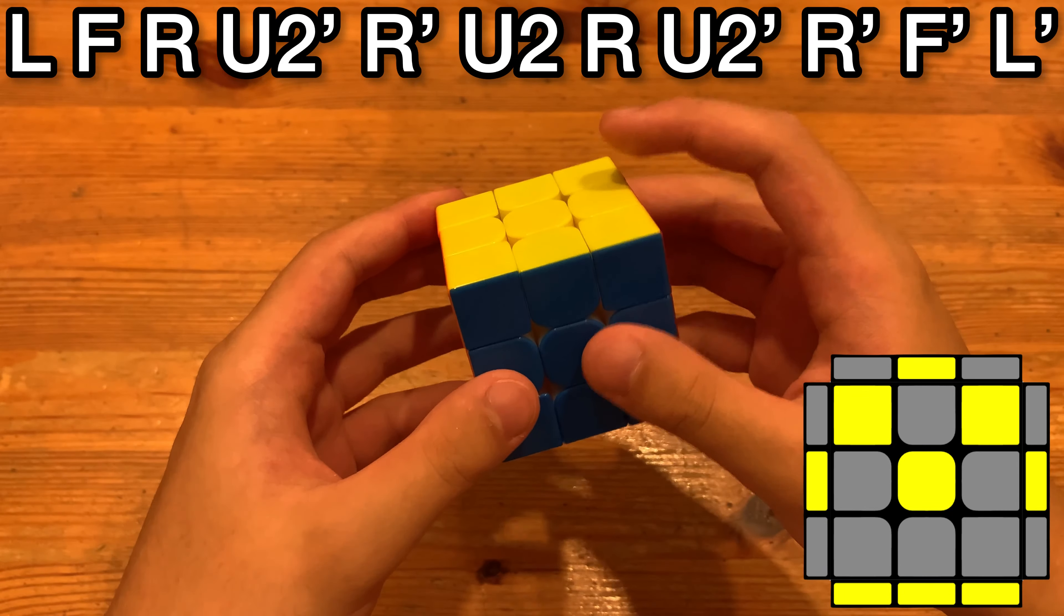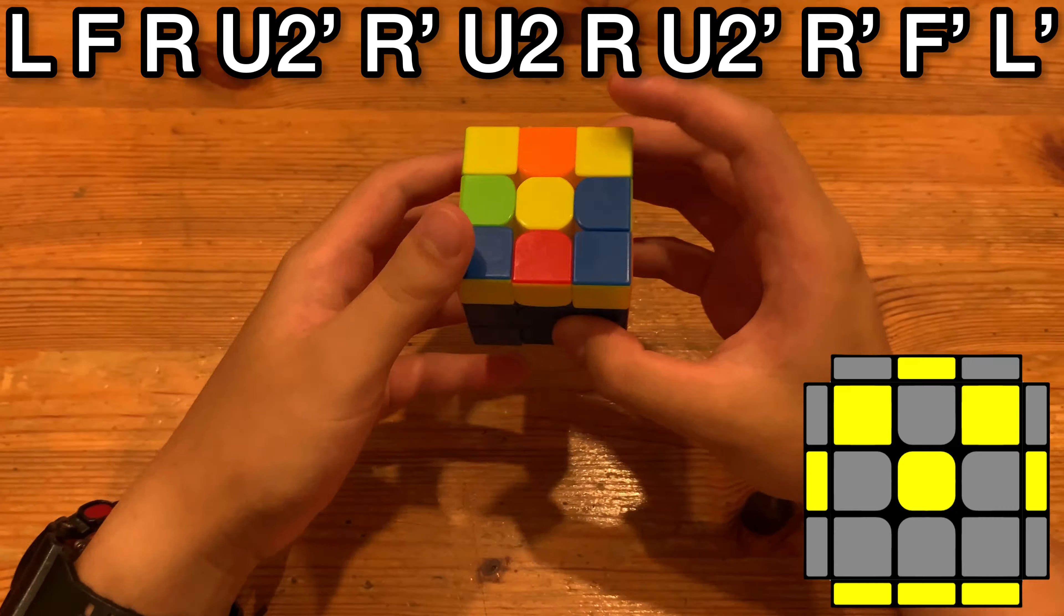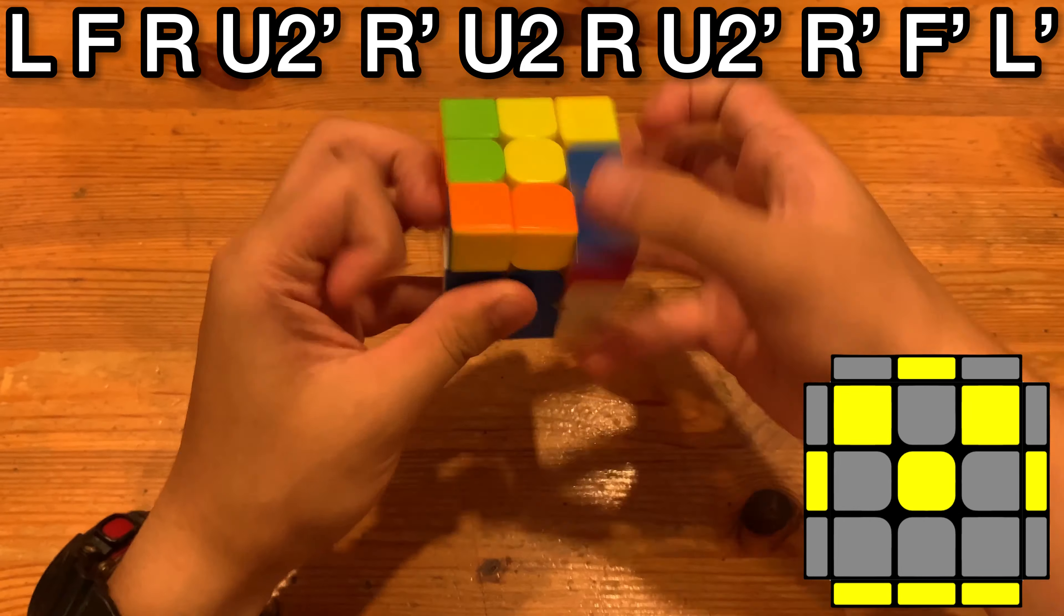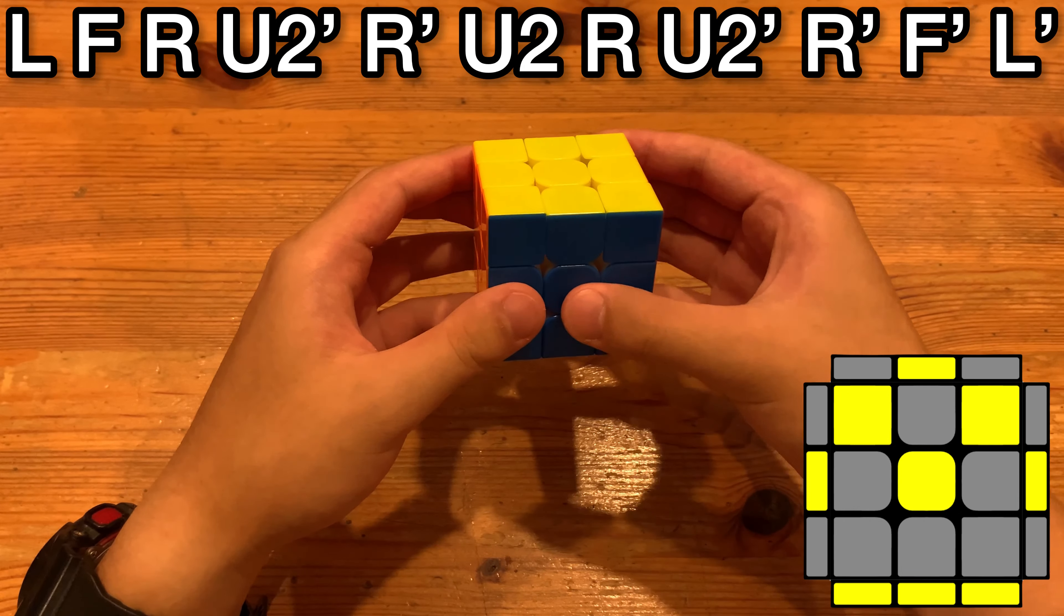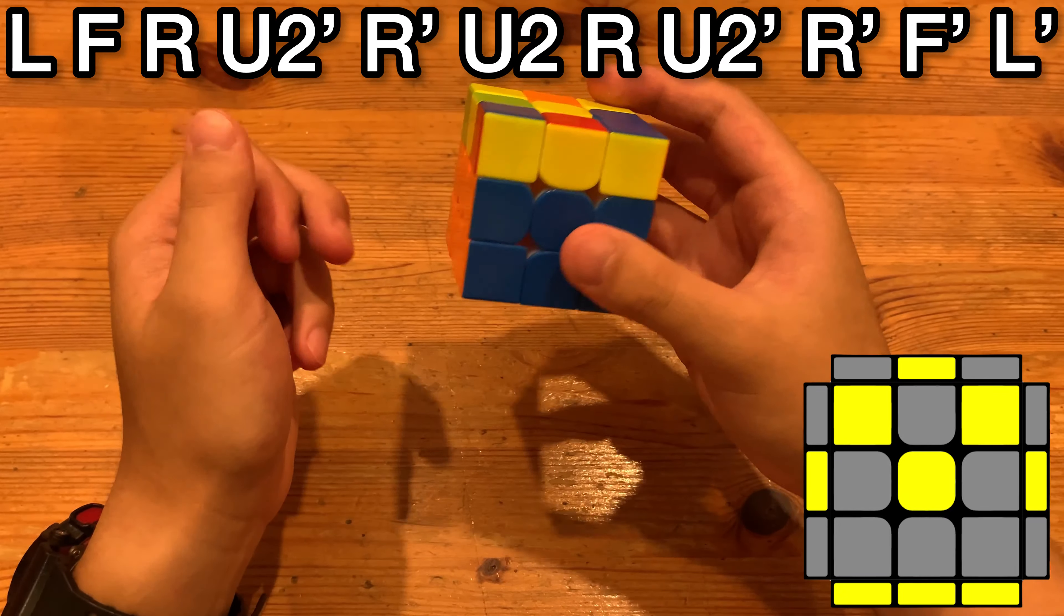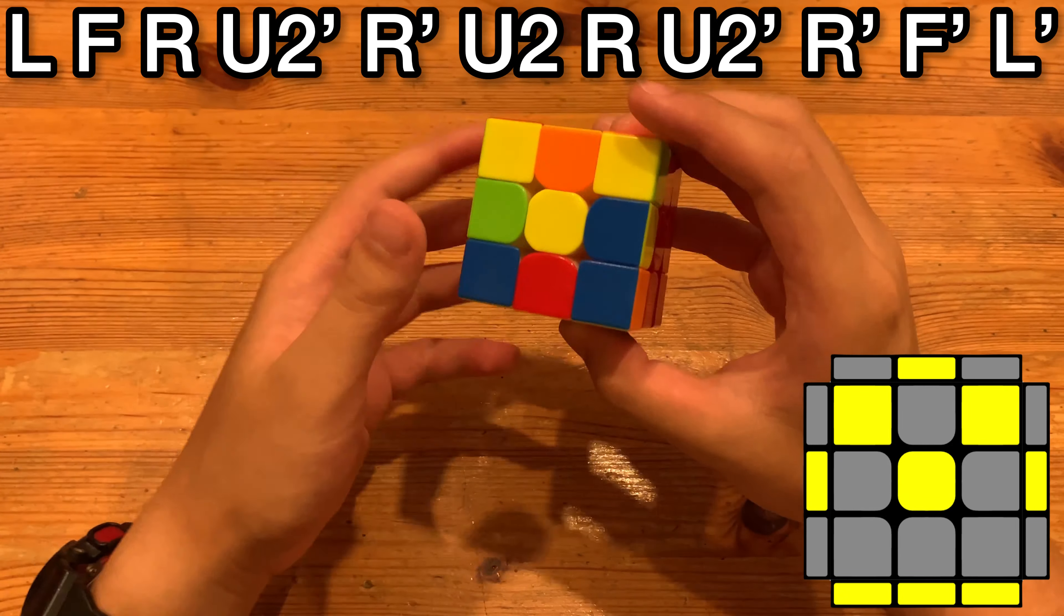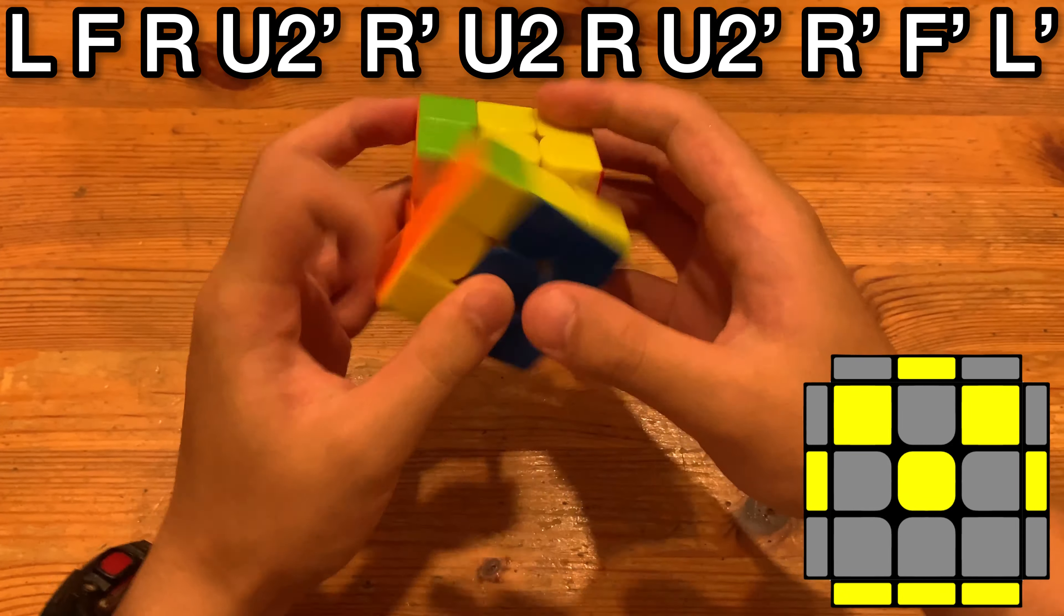So yeah, if you already have your thumb on top, you can just do this, but if you don't, you can do this instead. Or if you want to re-grip because you have pre-UF, this works as well.